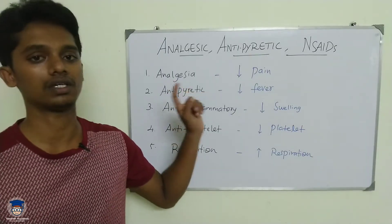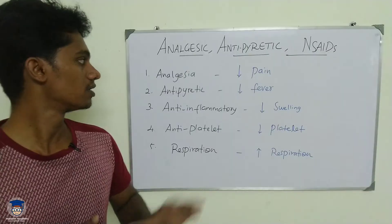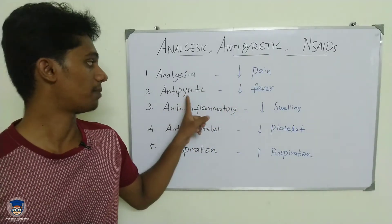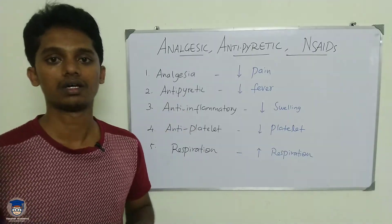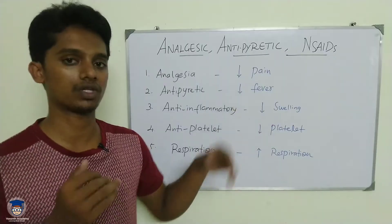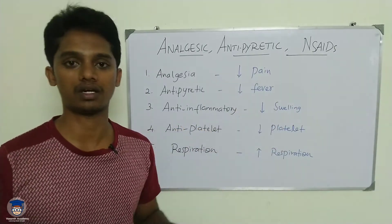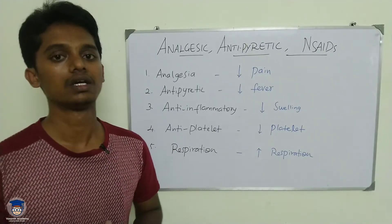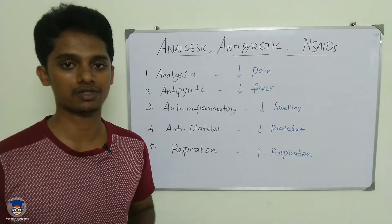The pharmacological actions of salicylates include analgesia — reduced pain sensation; antipyretic action — reducing excessive body temperature back to normal, thereby reducing fever; and anti-inflammatory action — reducing swelling and inflammation. These three major actions are common to all NSAIDs including salicylates.